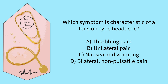A is incorrect. Throbbing pain is more characteristic of migraines, not tension type headaches, which typically present with a steady non-pulsatile pain. B is incorrect. Tension type headaches often involve bilateral pain, not unilateral pain. C is incorrect. Nausea and vomiting are more commonly associated with migraines, not tension type headaches. D is correct. Tension type headaches typically present with bilateral non-pulsatile pain without other features such as nausea and vomiting.